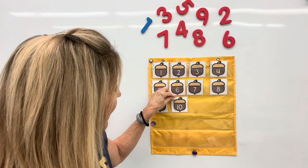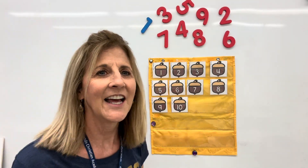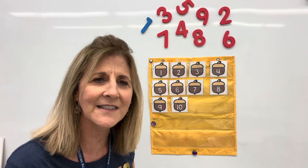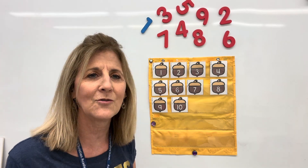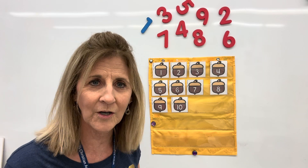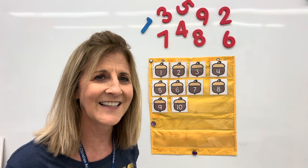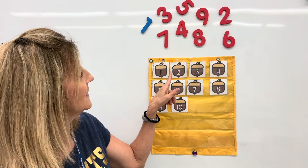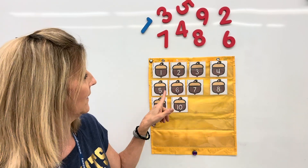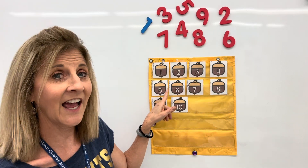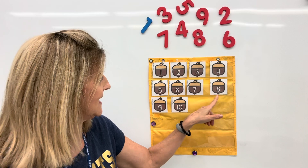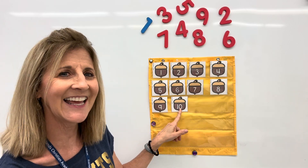Number ten. You counted all the way to ten — I'm so proud of you! Keep practicing those numbers so that you can count them backwards and forwards. Let's try one more time: one, two, three, four, five, six, seven, eight, nine, ten. That's right, good job!